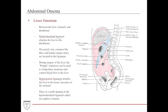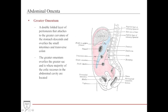The greater sac is the larger peritoneal space, while the lesser sac is accessed only through the epiploic foramen. The greater omentum is a double-folded layer of peritoneum that attaches to the greater curvature of the stomach, descends, and overlies the small intestines and transverse colon. It overlies the greater sac and is where the majority of colic recesses in the abdominal cavity are located — potential sites of fluid accumulation or infection.